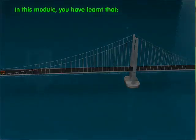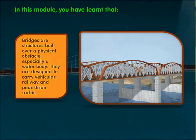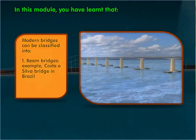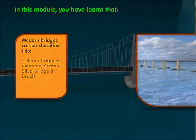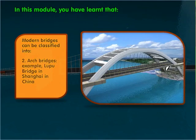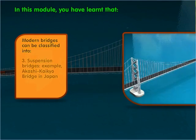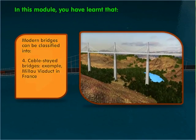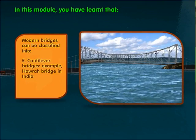In this module you have learned that bridges are structures built over a physical obstacle, especially a water body. They are designed to carry vehicular, railway and pedestrian traffic. Modern bridges can be classified into beam bridges (e.g. Costa-e-Silva Bridge in Brazil), arch bridges (e.g. Lupu Bridge in Shanghai, China), suspension bridges (e.g. Akashi Kaikyō Bridge in Japan), cable-stayed bridges (e.g. Millau Viaduct in France), and cantilever bridges (e.g. Howrah Bridge in India).